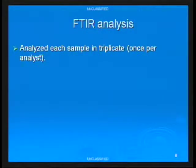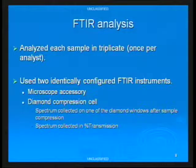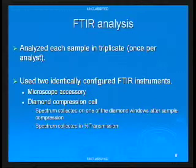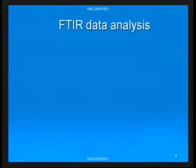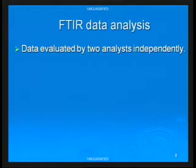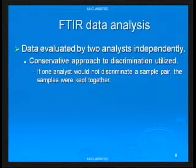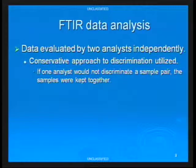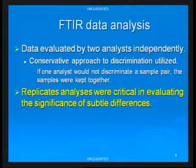We started with FTIR, analyzing each sample in triplicate — meaning each of the three of us analyzed every sample once. We used two identical FTIR instruments with a microscope accessory and a diamond compression cell, using one of the diamond windows as the substrate, collecting spectra in percent transmittance. Two of us evaluated the data independently. The conservative approach was that if one of us would not discriminate a sample pair, that pair stayed together. Replicate analyses were critical at this stage to assess the significance of subtle differences.